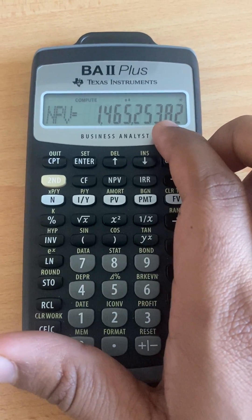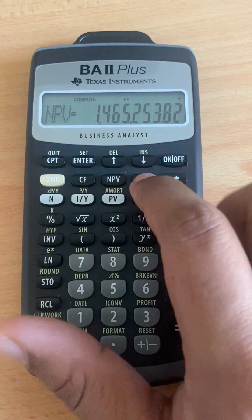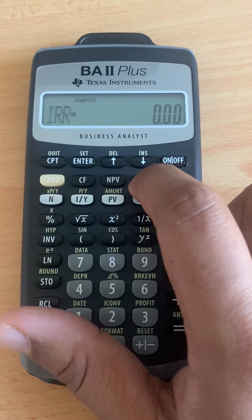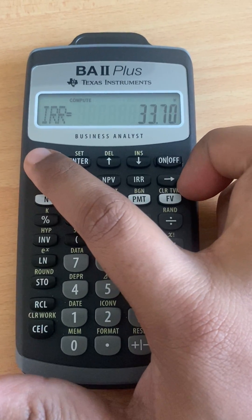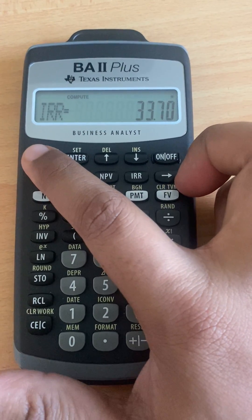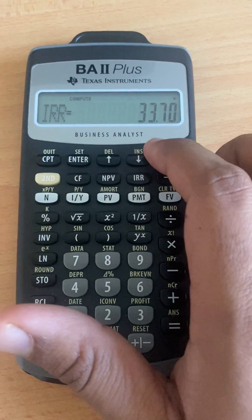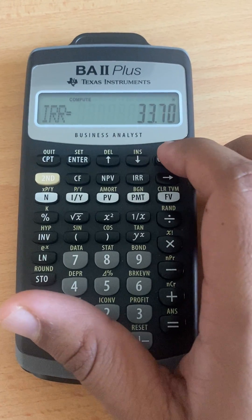Okay, you get NPV, and then you go further, you press IRR, and then you just press compute. So you will get 33.7%, right? That's all for Project Z.